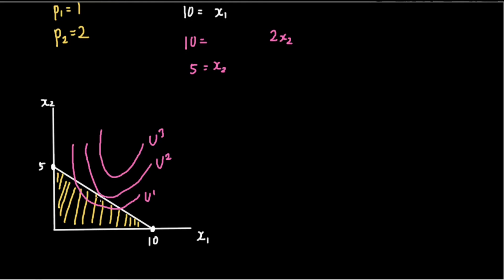We say that utility is maximized when the indifference curve is tangent to the budget line. Why? Because this is the highest utility level that the consumer can afford. But how do we show this mathematically? At the point where U2 touches the budget line, the slope of the budget line is equal to the slope of the indifference curve. The slope of the budget line is the change in x sub two with respect to a change in x sub one.